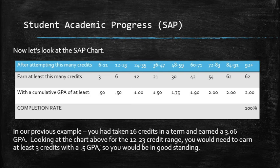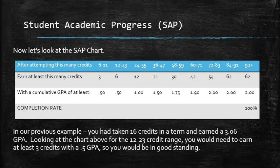Now let's talk about the SAP chart. It has a couple of different parameters: if you've attempted a certain number of credits, you have to earn a minimum number of credits and maintain a minimum GPA. At the very bottom, you'll see completion rate at 100%, which applies once you've completed 92 or more credits — essentially someone pursuing a second or third degree. For most students, we're looking at the other two parameters: earned credits based on attempted credits, and cumulative GPA. In the previous example of 16 credits and a 3.06 GPA, looking at the 12-to-23 range, you would need at least 3 credits and a 0.5 GPA — so you'd be in good academic standing.